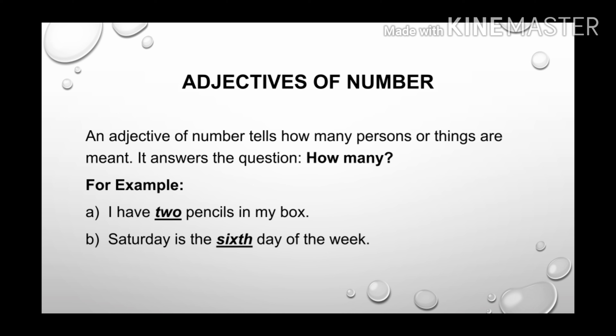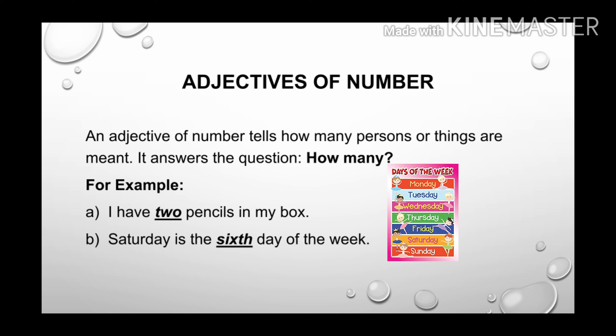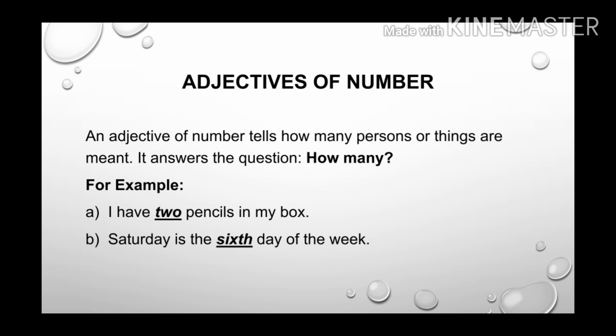The next kind of adjective is adjectives of number. An adjective of number tells how many persons or things are meant. It answers the question how many. For example: I have two pencils in my box. Here the adjective two is telling about how many pencils, so it is an adjective of number. Saturday is the sixth day of the week — here sixth is the adjective of number.